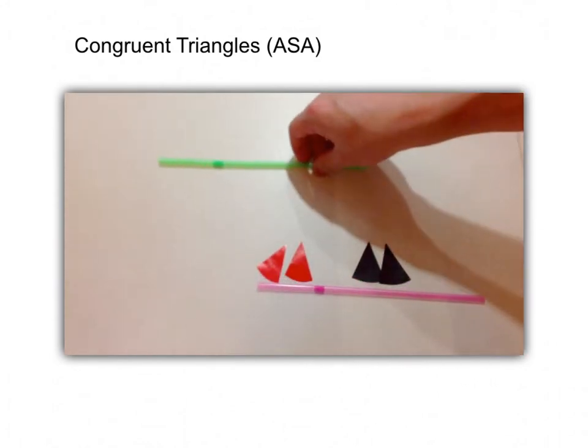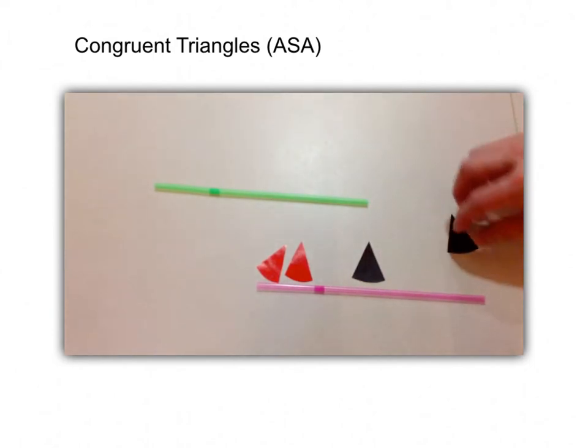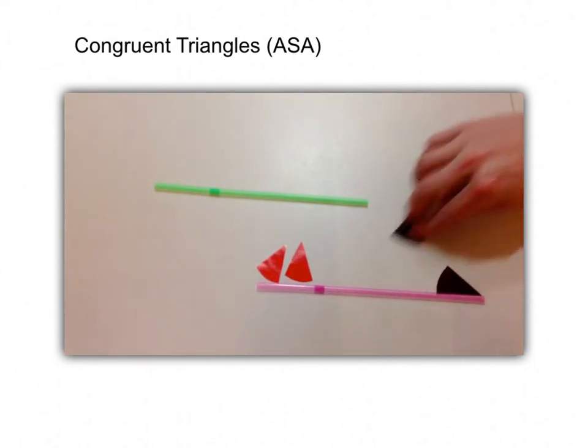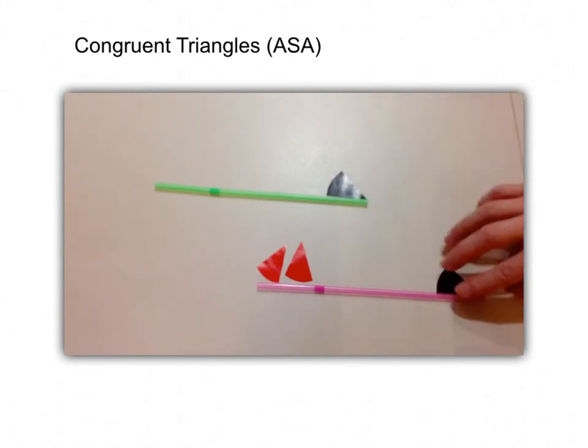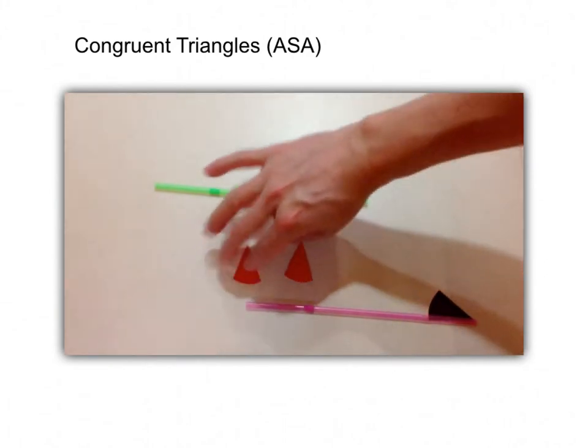And now we are going to arrange them into two congruent triangles under the condition ASA. So this will be the pair, the first pair of equal angles.